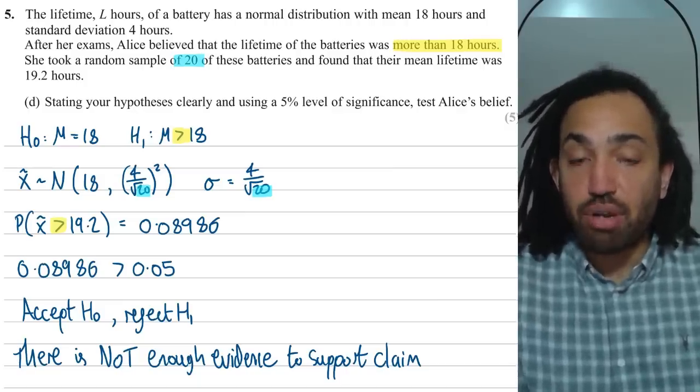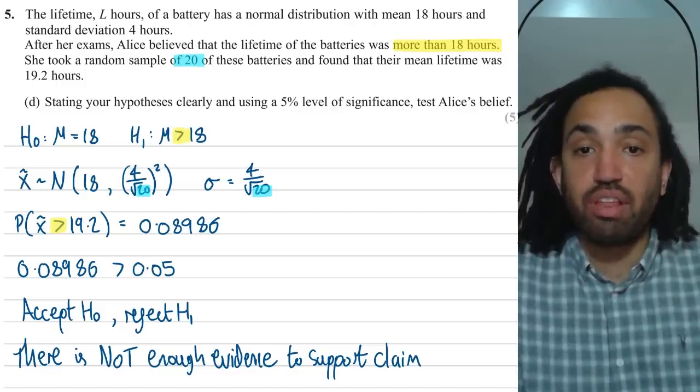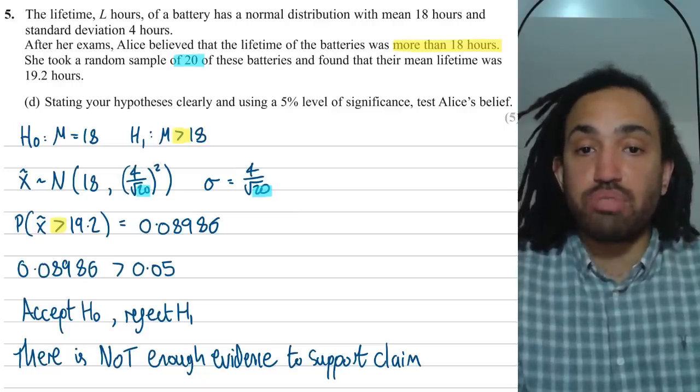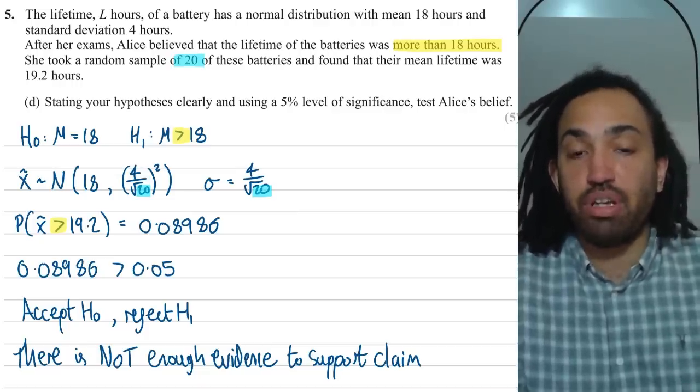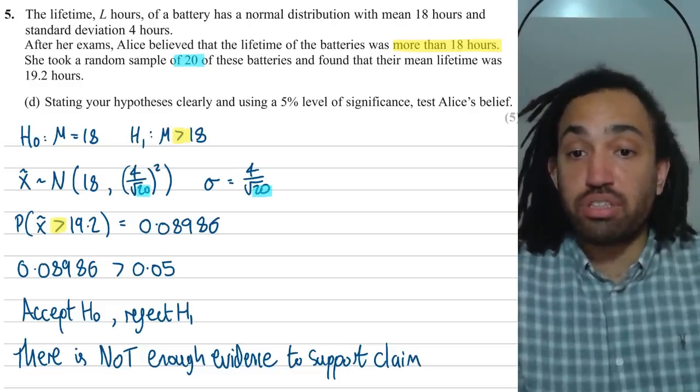So I accept H0, I reject H1. There is no reason to believe that the mean has changed because the observed value is likely to happen using the old mean. So therefore, we say there is not enough evidence to support the claim.